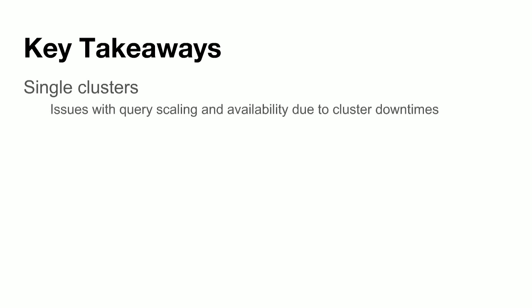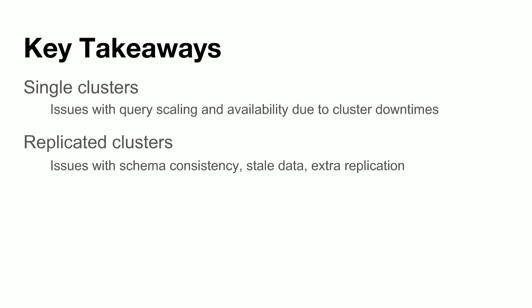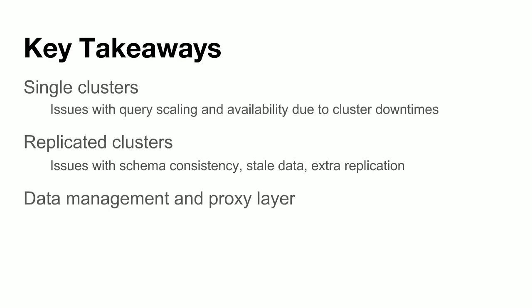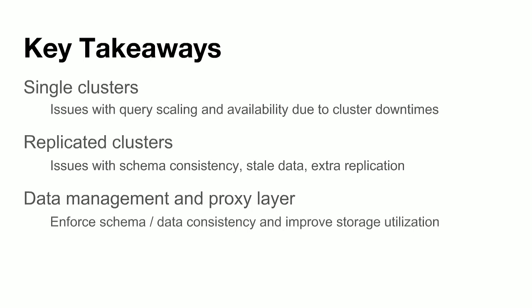The key takeaways from this talk are primarily these: we started off with single cluster mode on Vertica and ran into issues around scaling and availability due to cluster downtime. We then set up replicated clusters to handle those issues, but ran into problems around schema consistency, data staleness, and data replication. So we built an entire ecosystem around Vertica with abstraction layers around data management, ingestion, and proxy. With this setup, we were able to enforce consistency and improve storage utilization, scaling Vertica usage at Uber to power some of our most business-critical use cases.